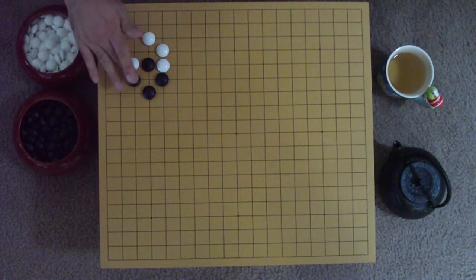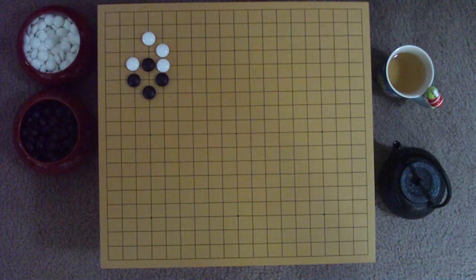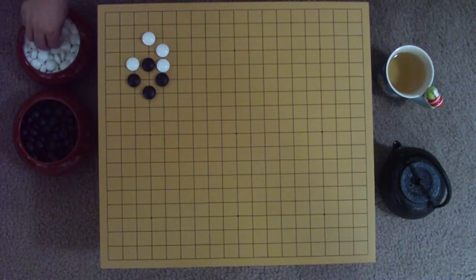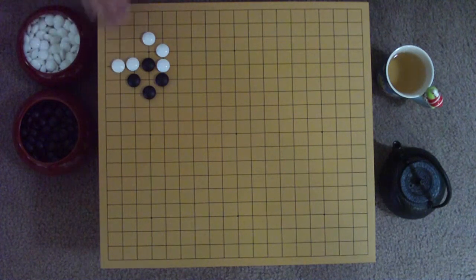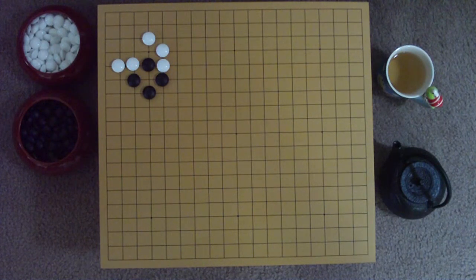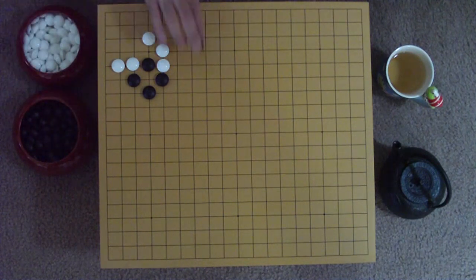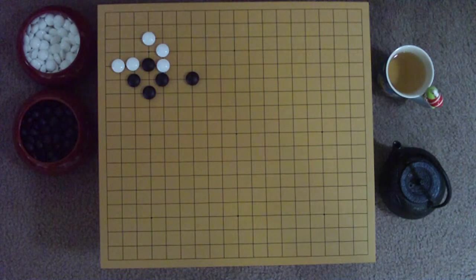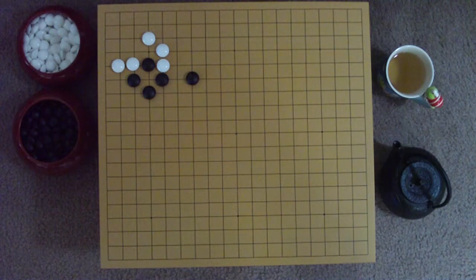Black may use it to put pressure upon that stone with a diagonal play to the 3rd line. White should respond by extending an iron pillar out toward the side to protect the corner territory.